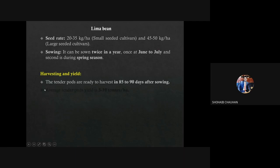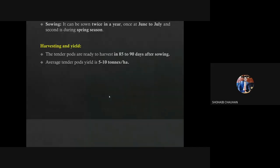For harvesting and yield: tender pods are ready for harvesting 85 to 90 days after sowing, and average yield is 5 to 10 tons per hectare.